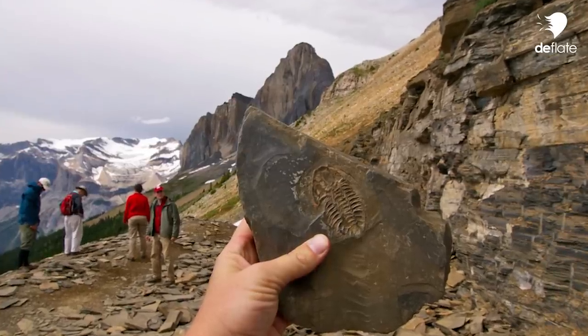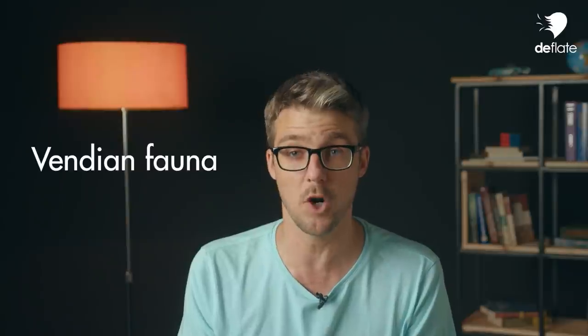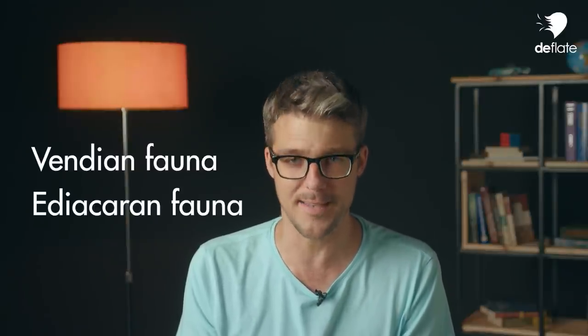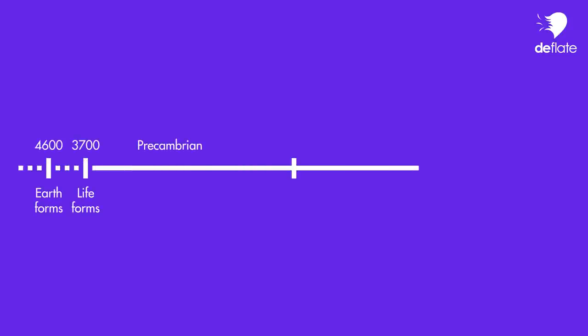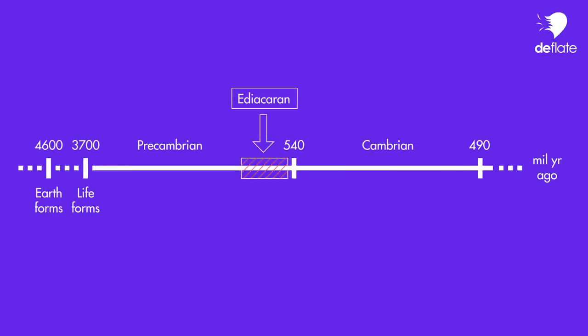The Darwinist argument that the ancestors of the Cambrian animals must have existed but cannot be recovered due to their softness and smallness is therefore not plausible. That's why another hypothesis was proposed — one that took a radically different approach, claiming that the Precambrian ancestors to the Cambrian animals are actually there in the fossil record. This hypothesis refers to fossils of what is called the Ediacaran fauna. The geological era of the Ediacaran is situated within the Precambrian era, forming its last part, at the very interface to the Cambrian era in which the sudden explosion of animal forms takes place.